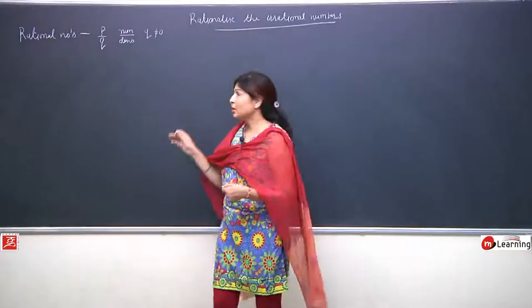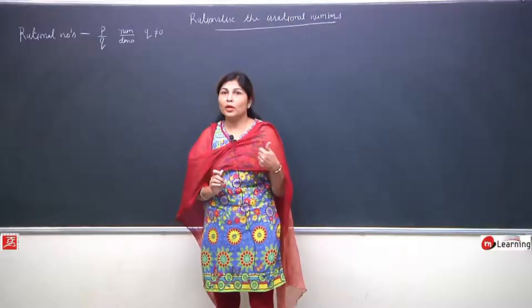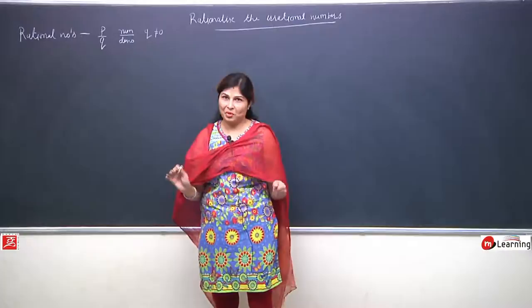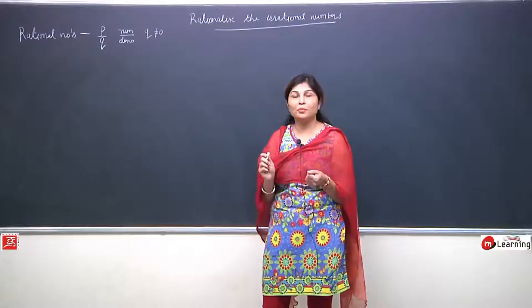If the denominator becomes zero, the term becomes indeterminate. So rational numbers are in the form of p upon q, means in fraction form, with a numerator and a denominator. The denominator can be any number except zero. When we studied rational numbers, we also studied their number line representation and how many rational numbers exist between two rational numbers.